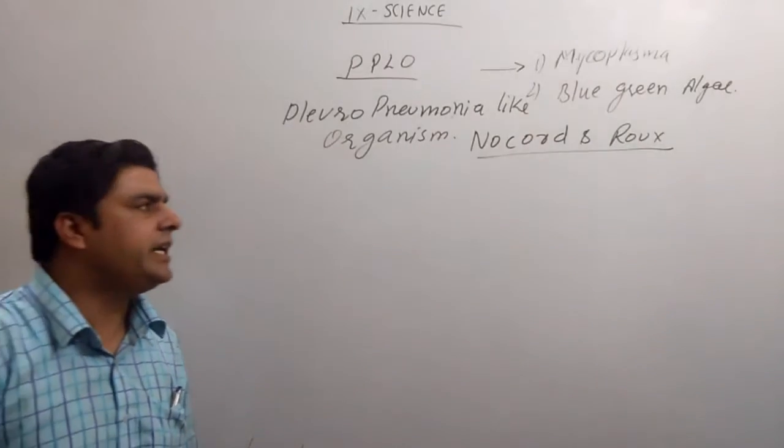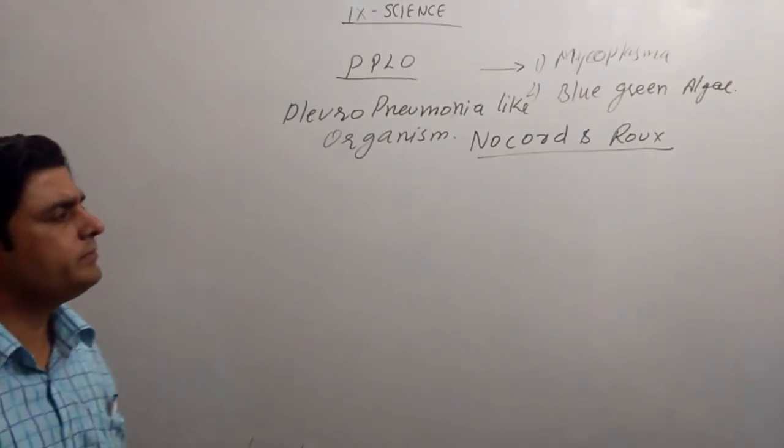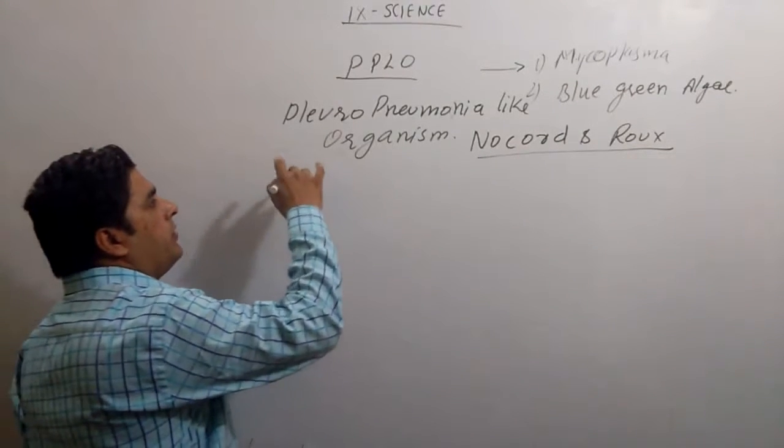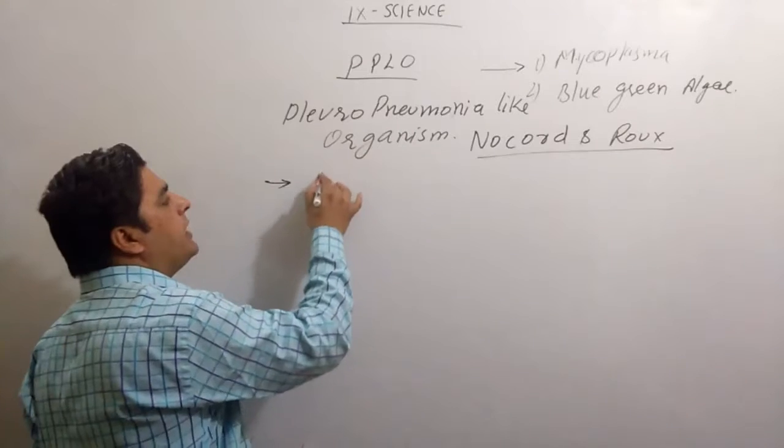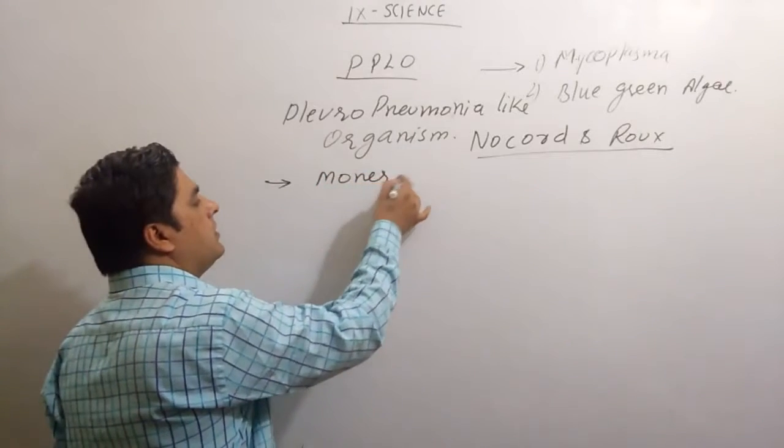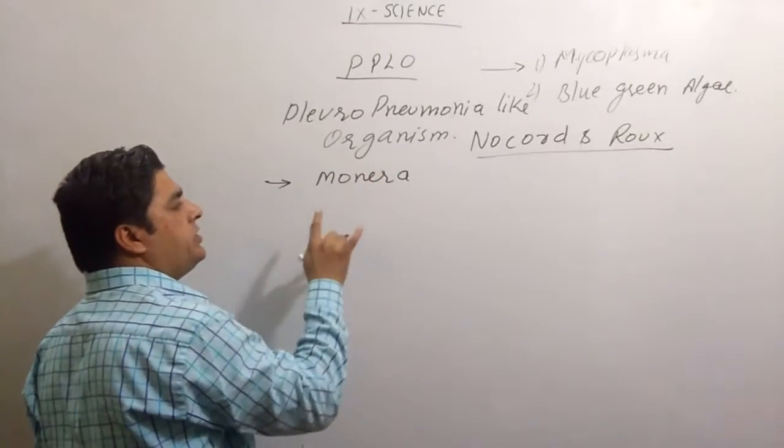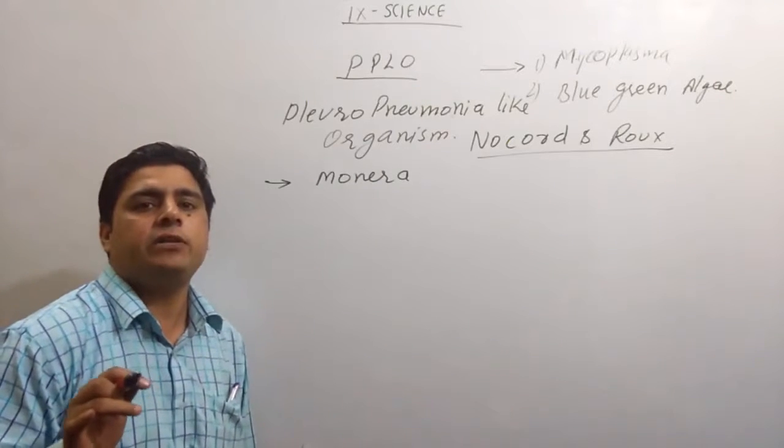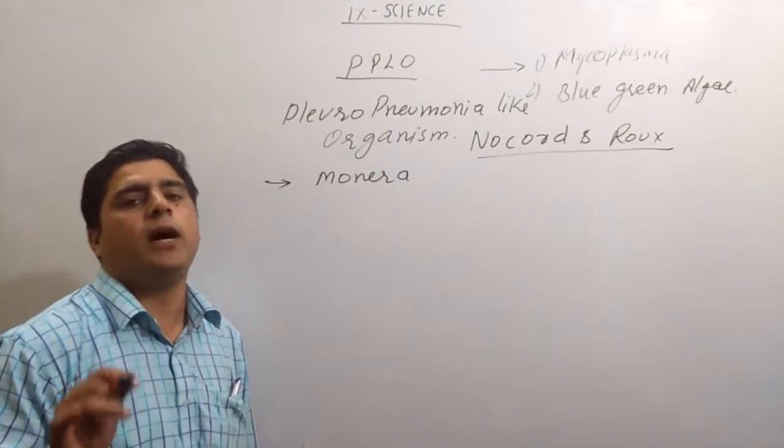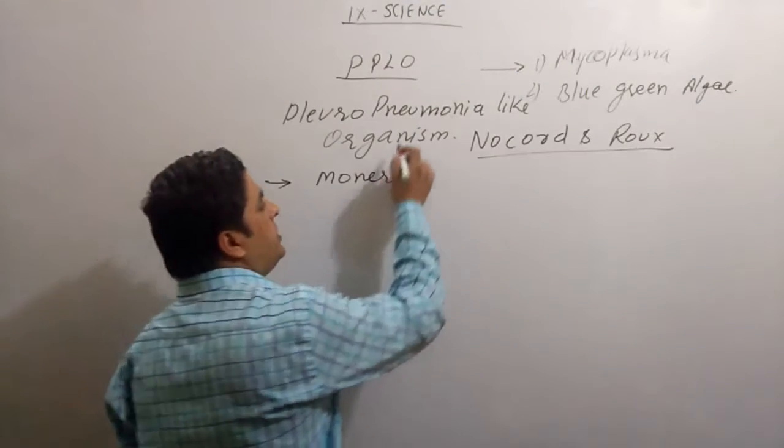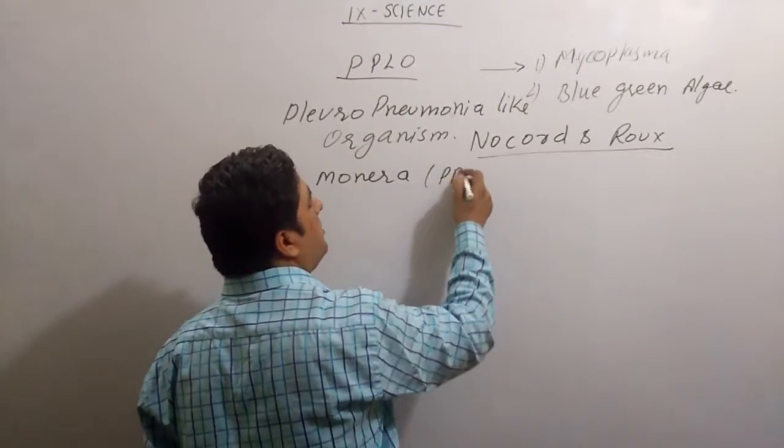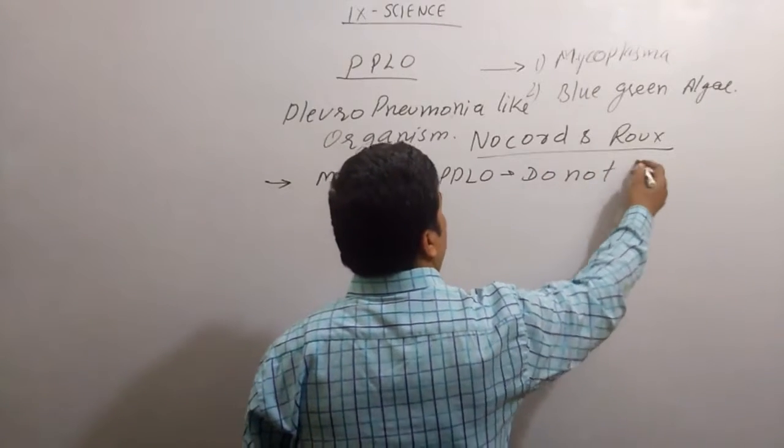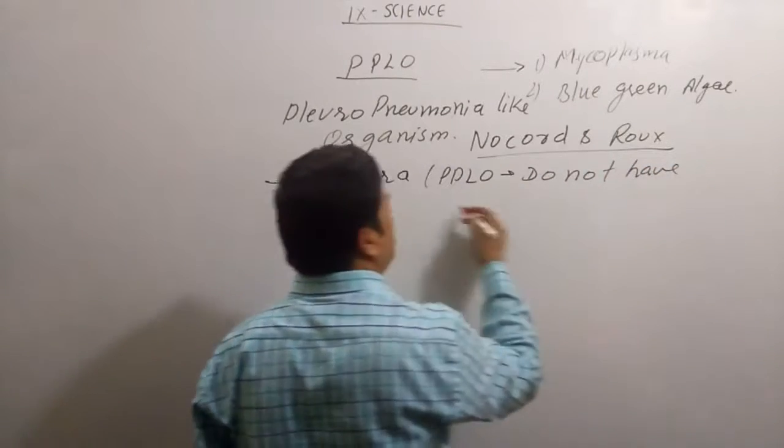In 1898, this organism was discovered. This is Monera. Instead of Monera, it belongs to cell wall. It does not have cell wall. PPLO does not have cell wall.